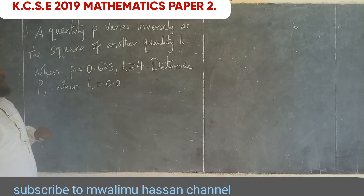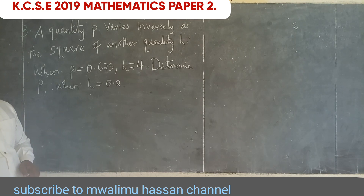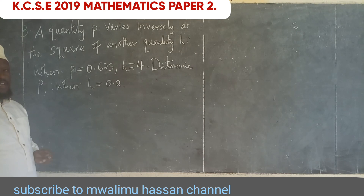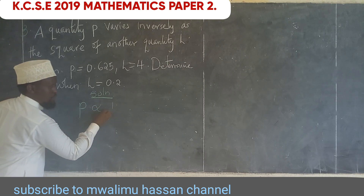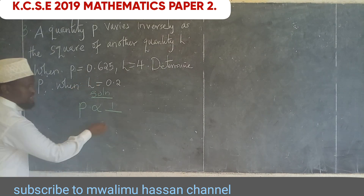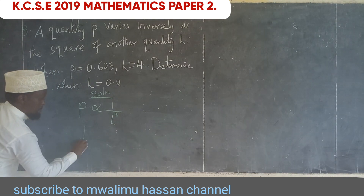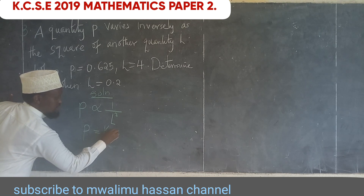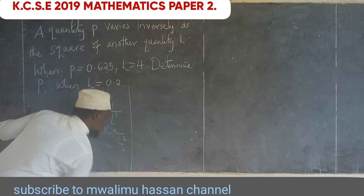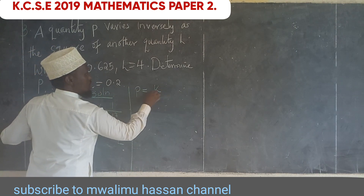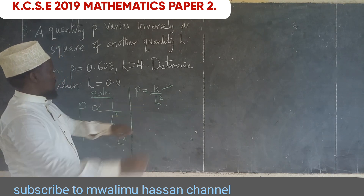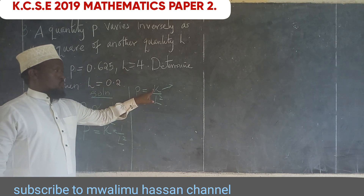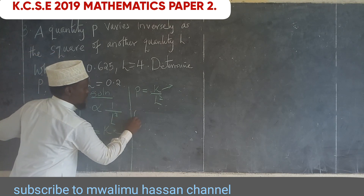Question 3: A quantity P varies inversely as the square of another quantity N. When P is 0.625, N is 4. Determine P when N is 0.2. Since P varies inversely as N², we write P = K/N², where K is the constant of proportionality.